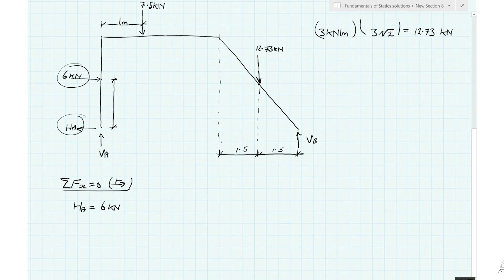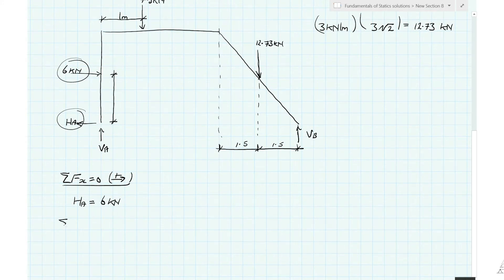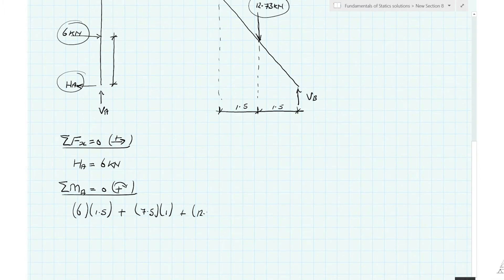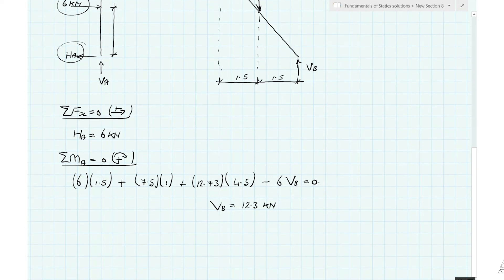Let's take the sum of the moments. Let's take moments about point A. All right, simply solve for VB equal to, let me see, 12.3 kilonewtons. Positive number, it's in the direction assumed.